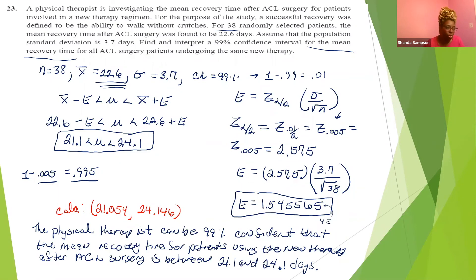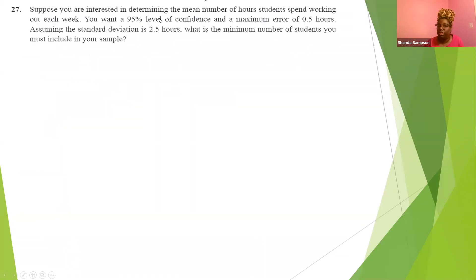So the last problem that I'm going to show you is how to find the sample size. This one says, suppose you are interested in determining the mean number of hours students spent working out each week and you want a 95% confidence interval and a maximum error of 0.5 hours. Assuming your standard deviation is 2.5 hours, what is the minimum number of students you must include in your sample? So now you're looking for n.